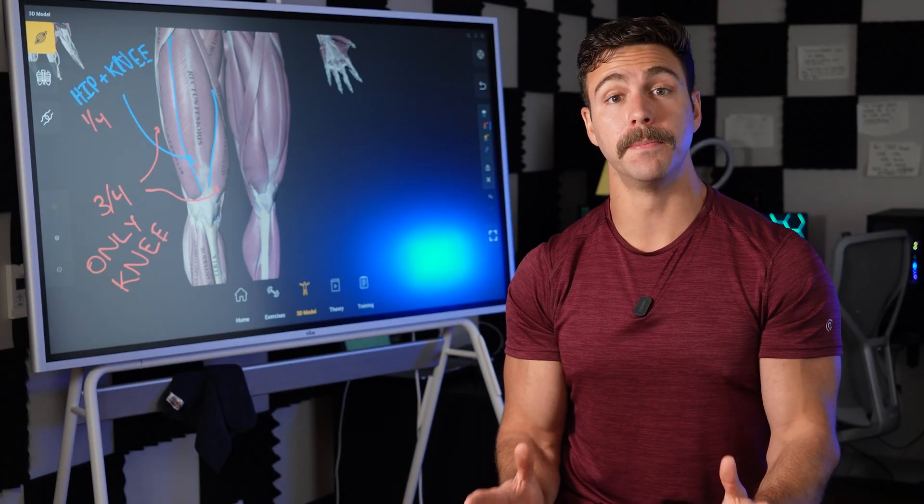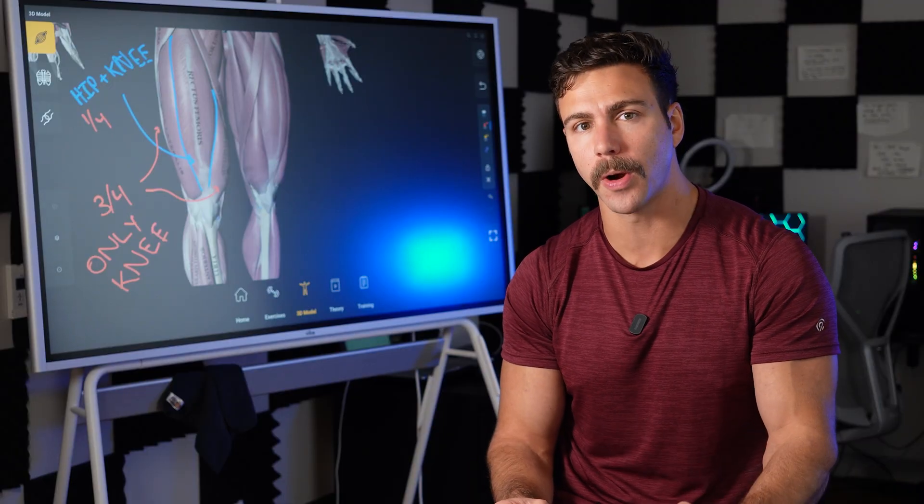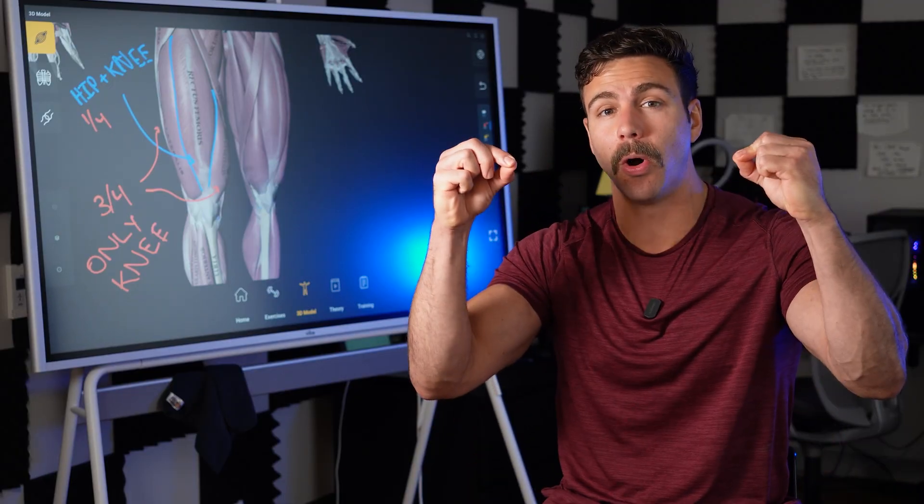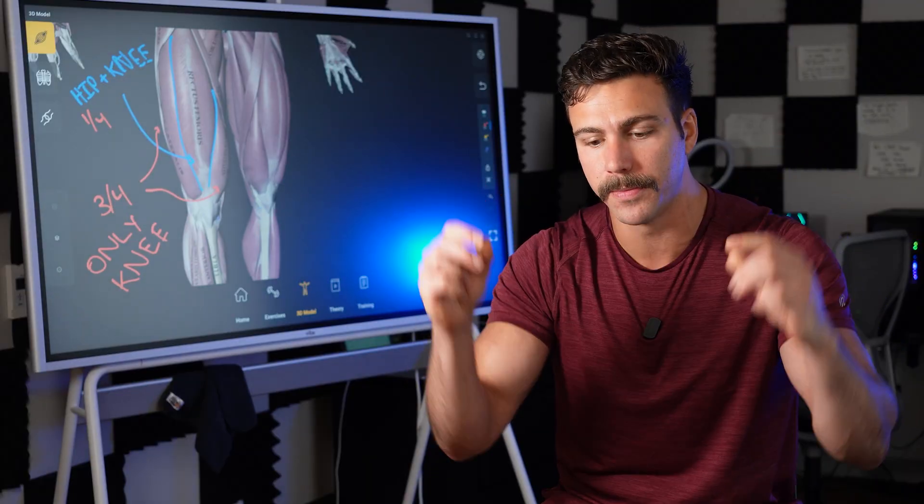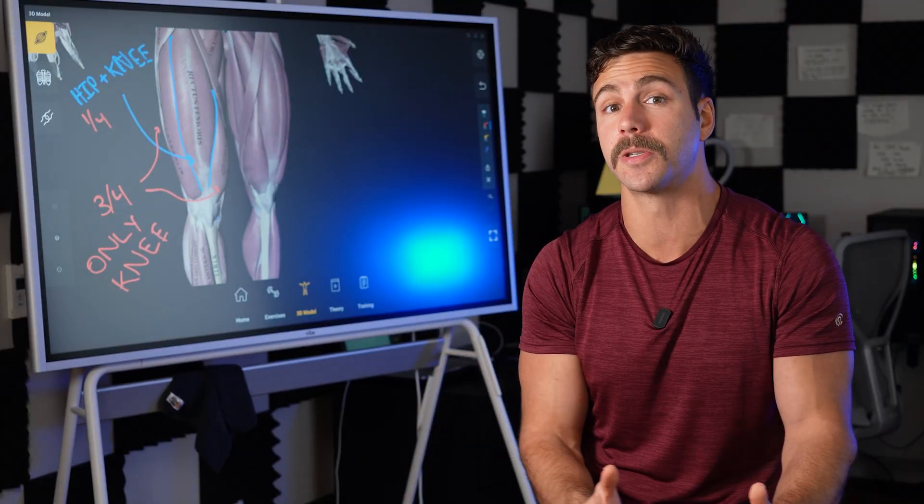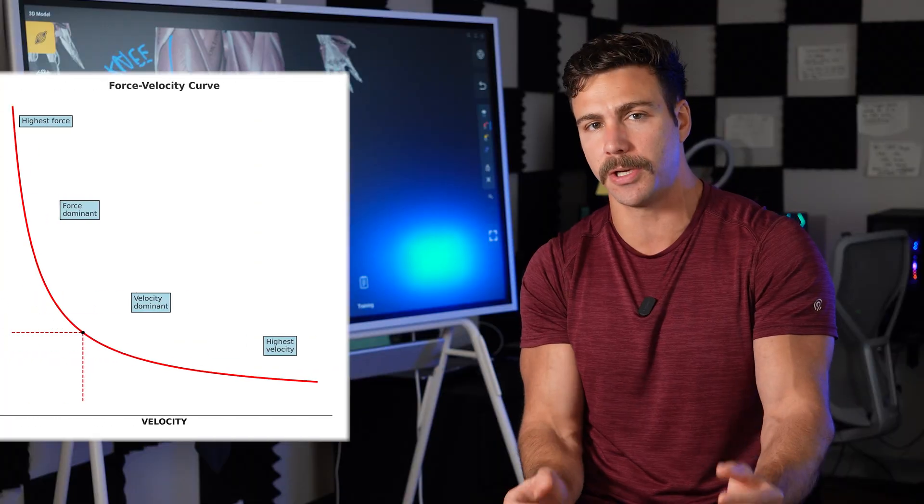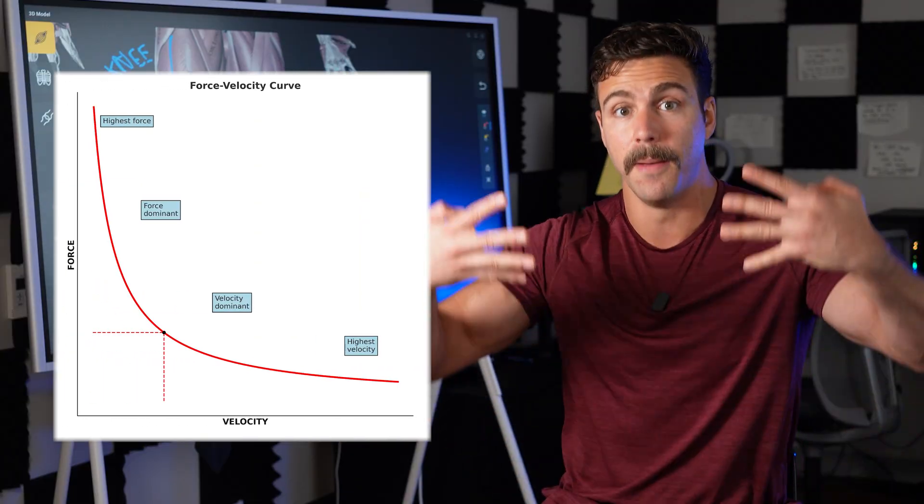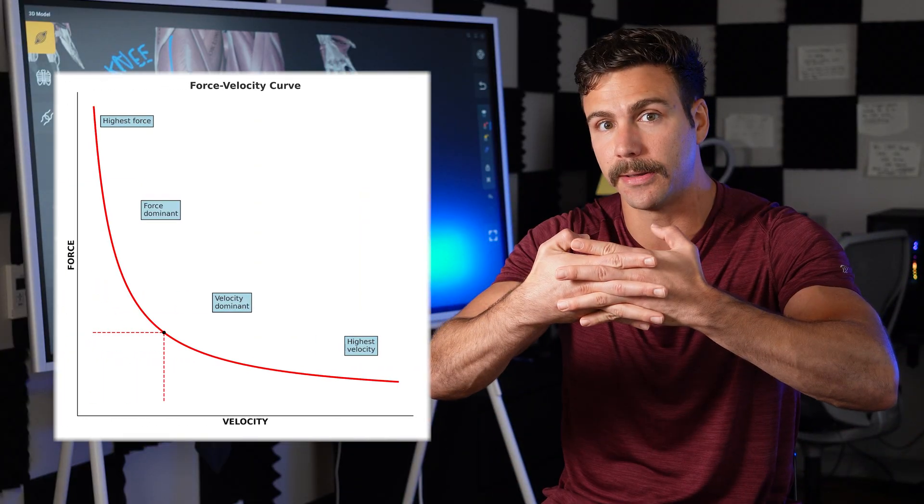Before we dive in, it's important to note that the main driver of muscle growth is mechanical tension on the muscle fiber level. Now, the relationship that describes how much mechanical tension a muscle fiber is experiencing based on how fast it's contracting is known as the force velocity relationship.